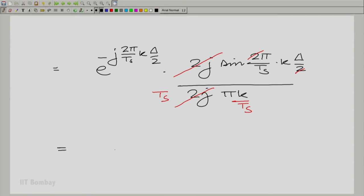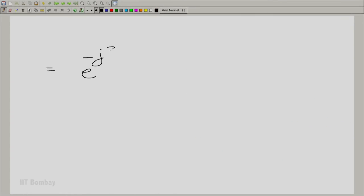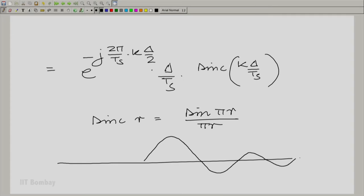This would now be equal to e raised to the power minus j 2π/t_s k delta/2 times 1/t_s. Now, how does this look? This looks like a sinc function, is it not? You can multiply again numerator and denominator by delta. So I can bring a delta here on the numerator and put a delta on the denominator. Look at this expression here. This is essentially a sinc function and we can write the whole expression in terms of sinc.